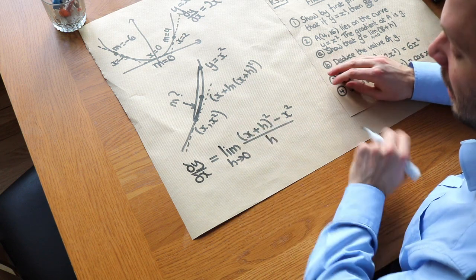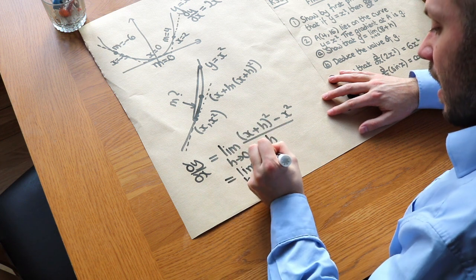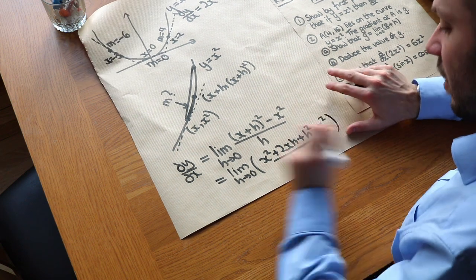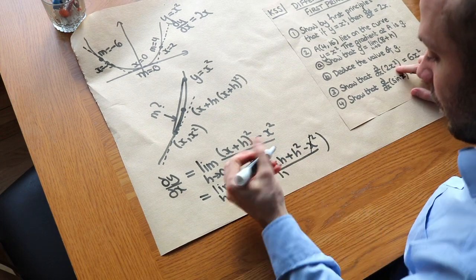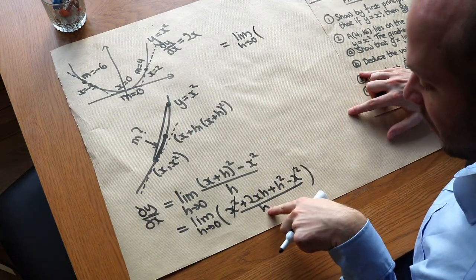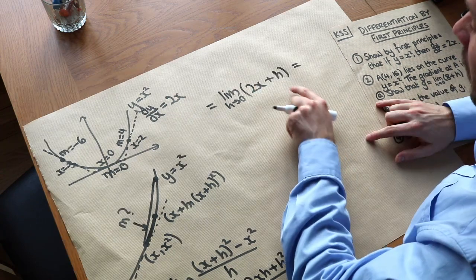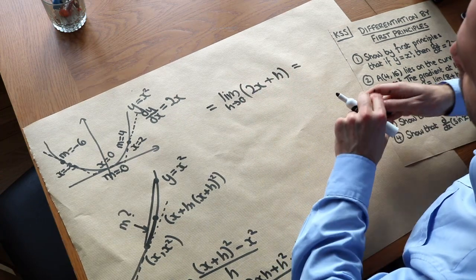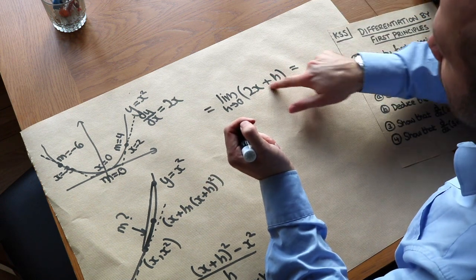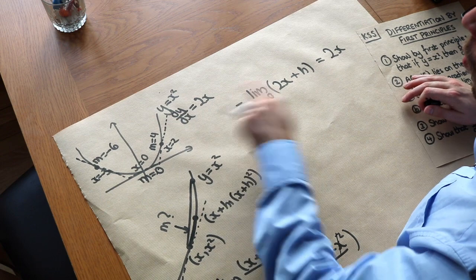So let's expand this out and see if it simplifies. Making sure we still write the limit, we expand to get x squared plus 2xh plus h squared minus x squared over h. The x squared terms cancel. Then we divide each remaining term by h: 2xh over h is just 2x, and h squared over h is just h. Now considering the limit as h tends towards zero, that plus h term effectively disappears — we've got 2x plus a really small number, which we can just call 2x. So we're left with 2x.